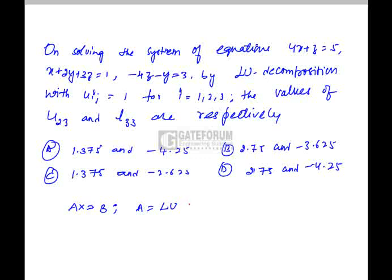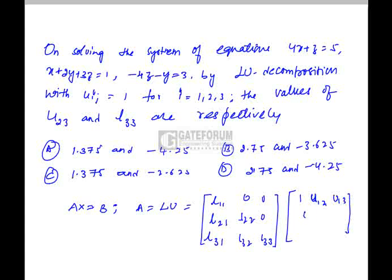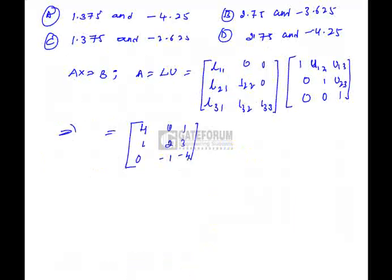If I substitute the value of L which is L11, 0, 0, then L21, L22, 0, 0, L31, L32 and L33. Similarly, the next one will be 1, U12 or it is U12, U13, then 0, 1, U23, 0, 0, 1. Now, the product of these two matrices is nothing but A which is 4, 0, 1, 1, 2, 3, 0, minus 1 and minus 4.